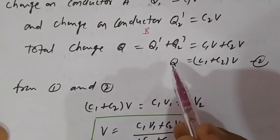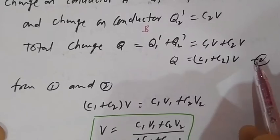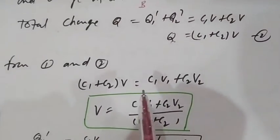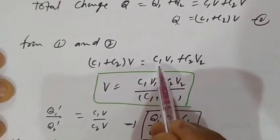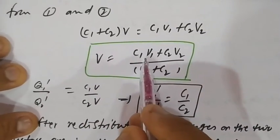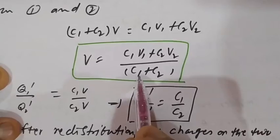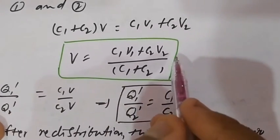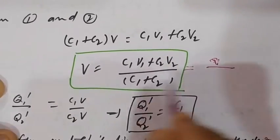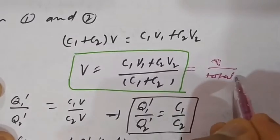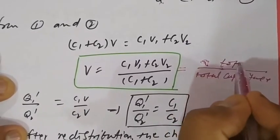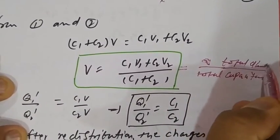So Q = C1V + C2V = (C1 + C2)V. From equations 1 and 2, Q is the same, so C1V1 + C2V2 = (C1 + C2)V, giving the common potential V = (C1V1 + C2V2) / (C1 + C2). This can also be written as total charge divided by total capacitance.